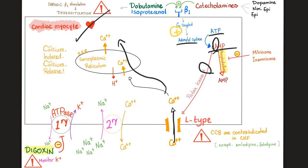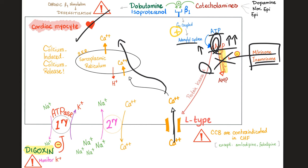Or you can inhibit phosphodiesterase by giving milrinone, inamrinone, or amrinone — this increases cyclic AMP, activates protein kinase A, opens the calcium channel, and increases contraction. That's why giving beta-1 agonists is a good idea for CHF. Giving milrinone or inamrinone is a good idea for CHF. Giving non-dihydropyridine calcium channel blockers is a bad idea for CHF.